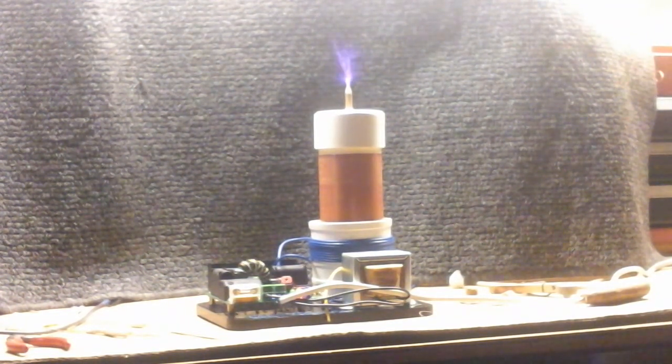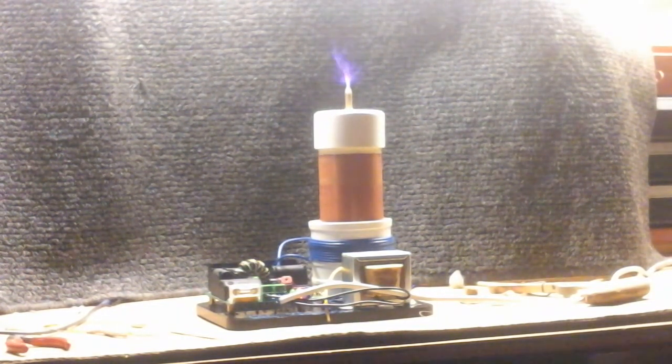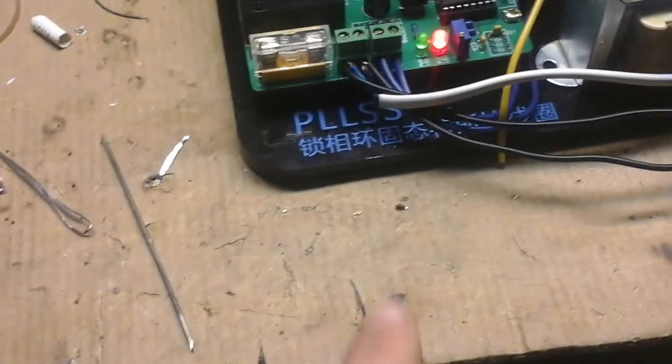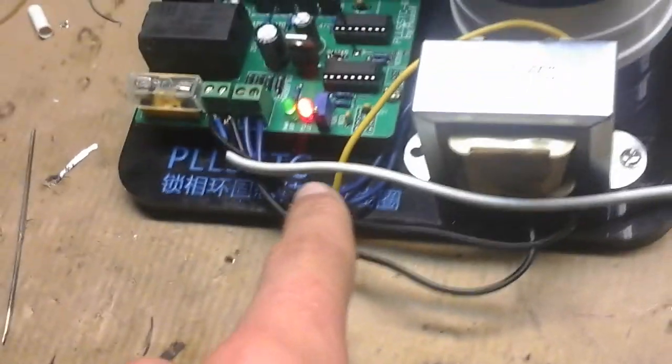So yeah, that's my eBay Tesla coil. It is a very nice coil. It's called the Phase Locked Loop Solid State Tesla Coil.